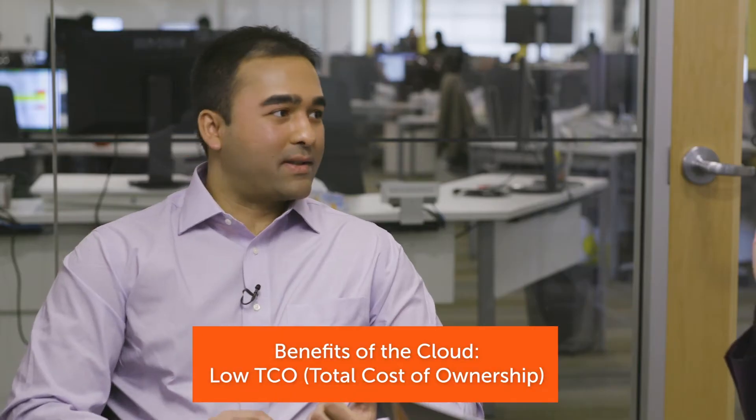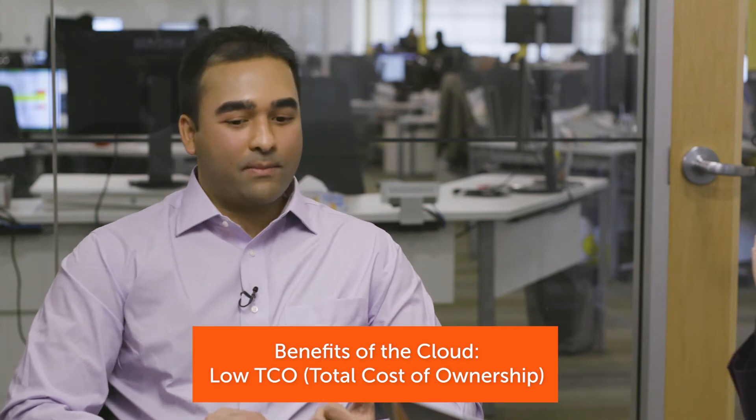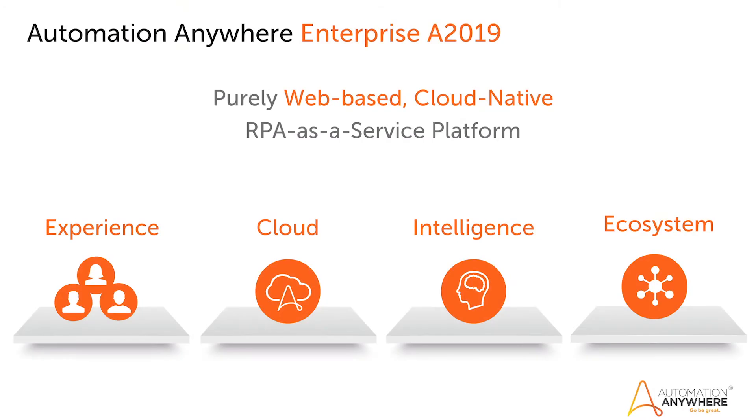Why the cloud? Why now? The number one is low TCO — total cost of ownership. With the Automation Anywhere Enterprise A 2019 cloud offering, we host and manage the underlying infrastructure for the customer. So they can basically be free of hosting the infrastructure and at the same time spread their cost evenly over long periods of time. Low TCO, total cost of ownership, is the number one value prop for cloud.